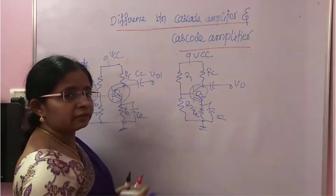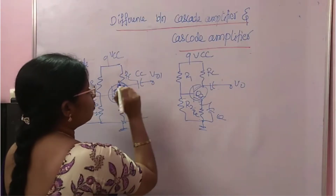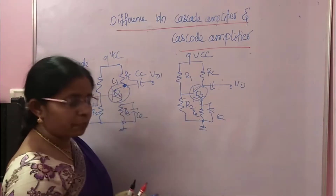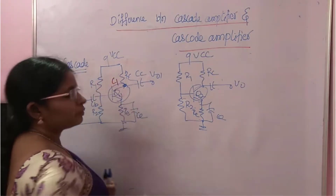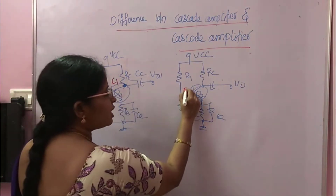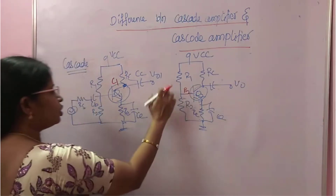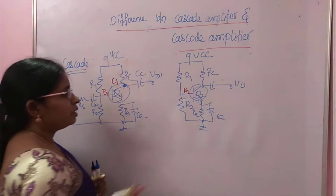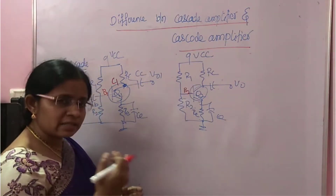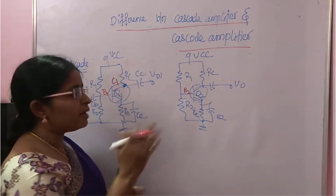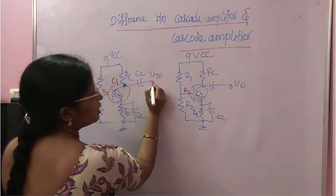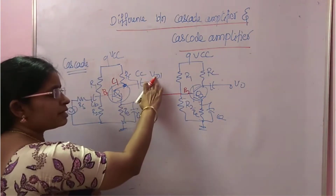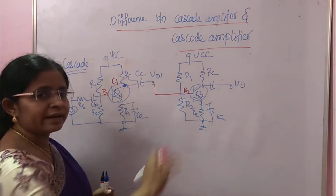This is V01. At the collector we are taking output. And this is B2. At B2 you have to give input, because at B1 we gave the input for the first stage. So in the second stage also, as this is a CE amplifier, you have to give the input at B2. Connect this one like this — first stage output is connected as input to the second stage.